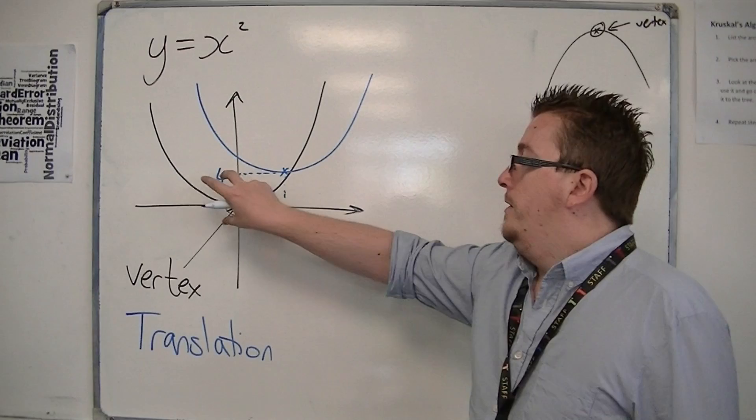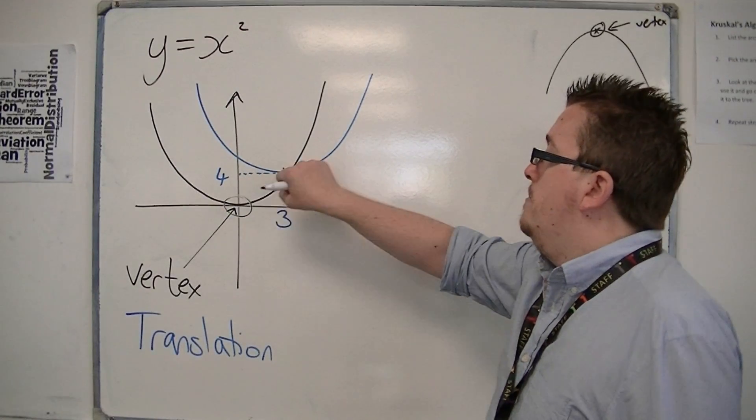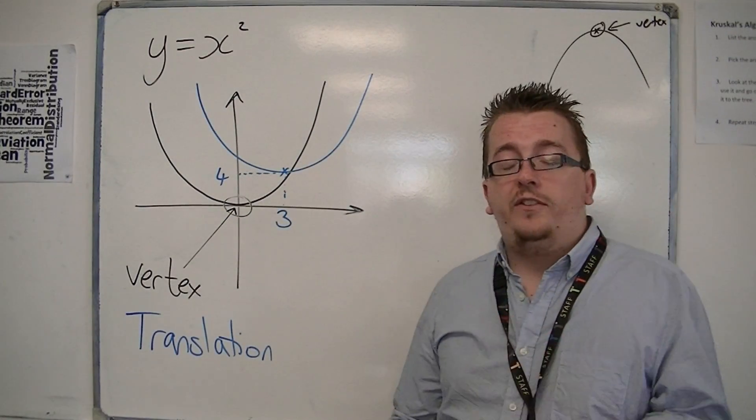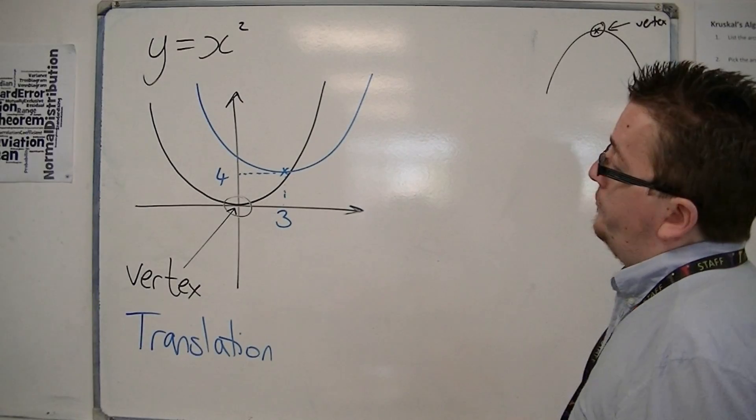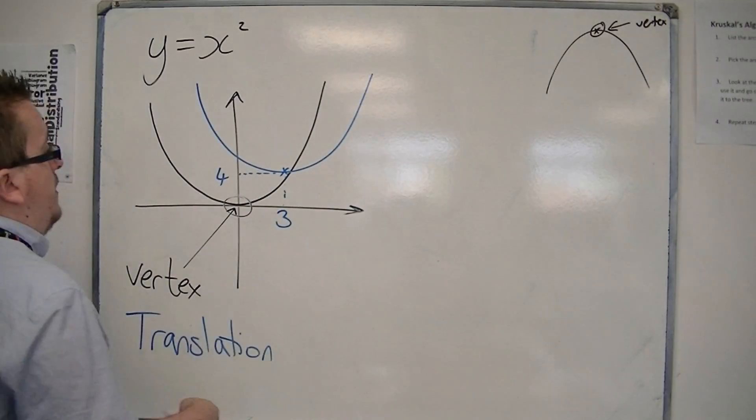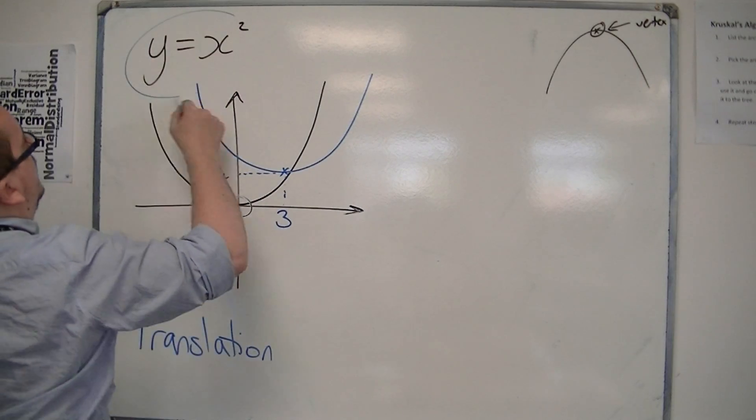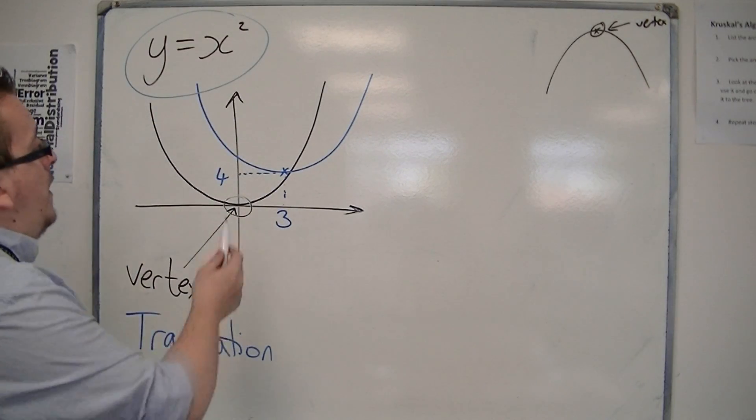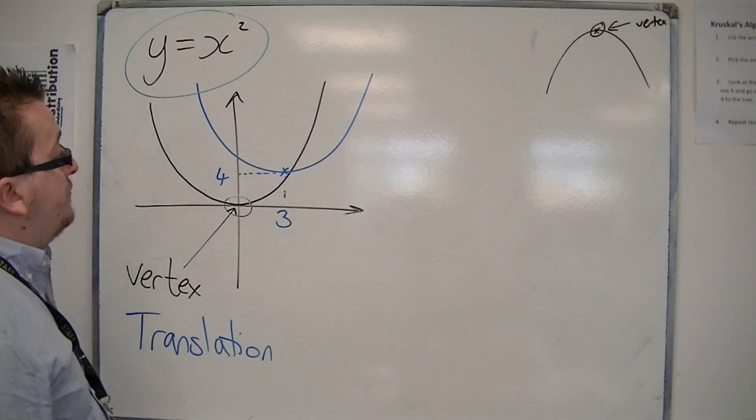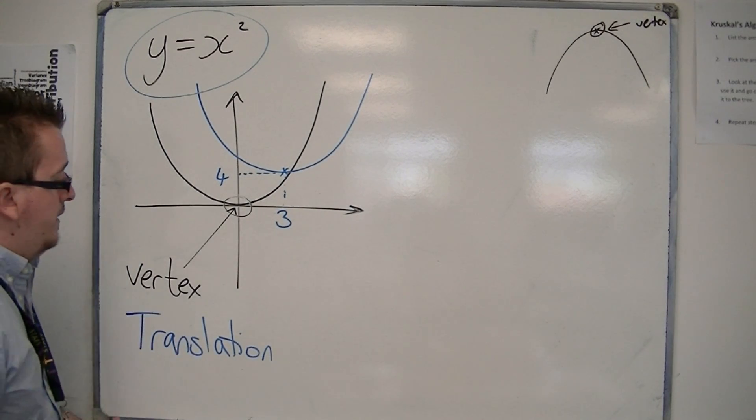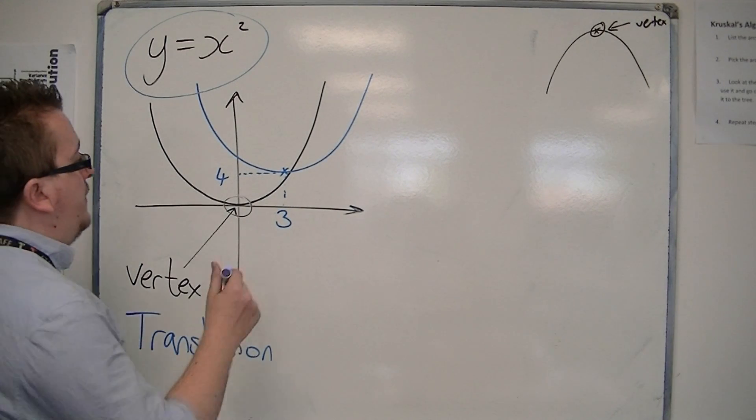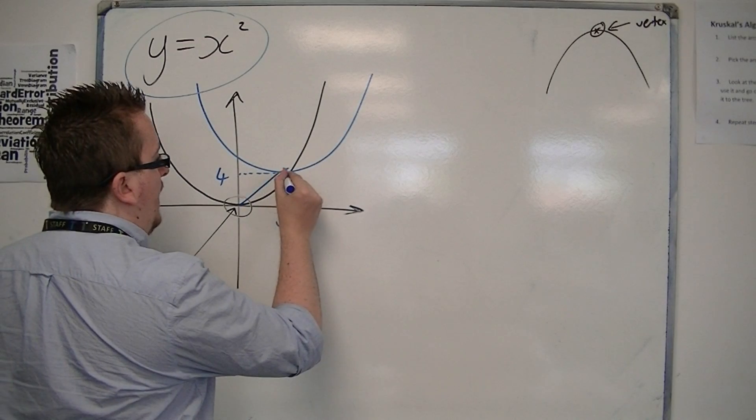So if I pick up this quadratic and move it so that the vertex is now at 3, 4, the equation subsequently changes. It is no longer y equals x squared for this blue curve. The way that you do it is that you think of this as a vector.